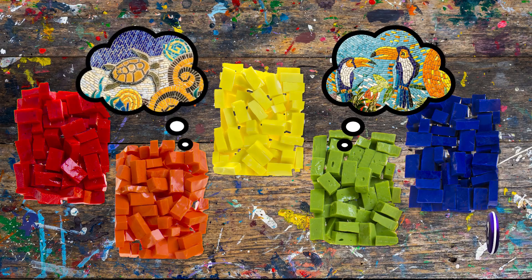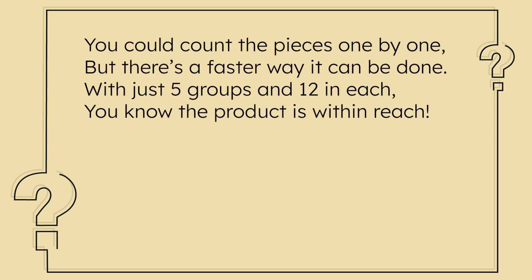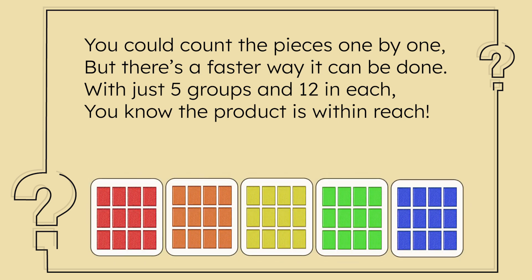I wonder what the professor is going to design with all these tiles. I'm certain they have something to do with our first puzzle. Let's check it out. You could count the pieces one by one, but there's a faster way it can be done. With just 5 groups and 12 in each, you know the product is within reach. Product — that must be the answer. So how can we figure out the total number of tiles?